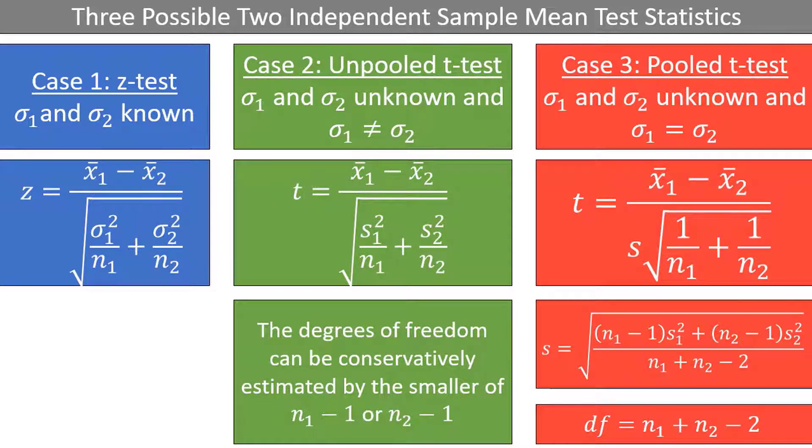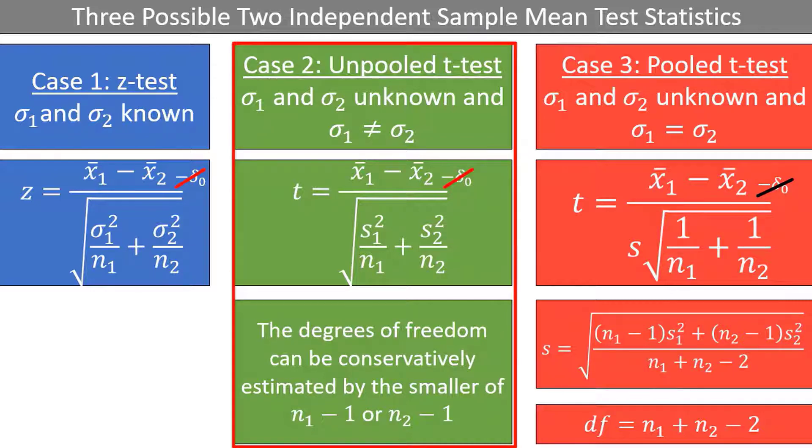Note that sometimes you will see an additional term in the numerator of any of these three formulas, such as minus mu1 minus mu2, or perhaps minus delta sub 0. This part is necessary if you are testing a difference other than 0, as we talked about earlier, but for our purposes, we do not need this additional term. We will be focusing on the middle case, which is the unpooled t-test, but just know that there are two other approaches that might be appropriate depending on the circumstance.